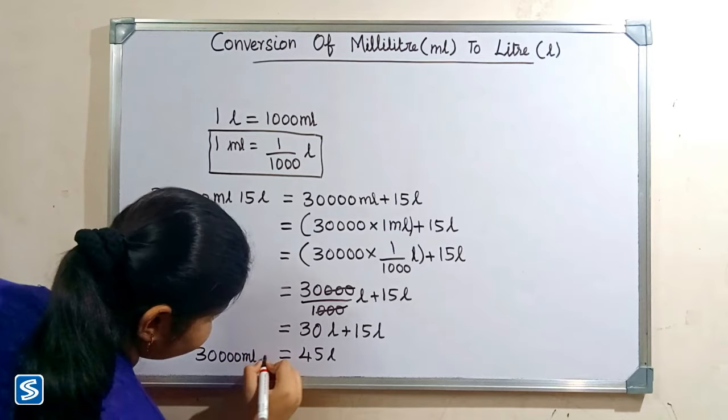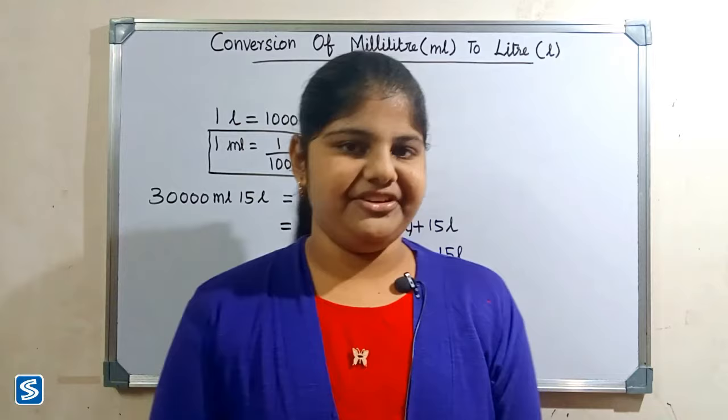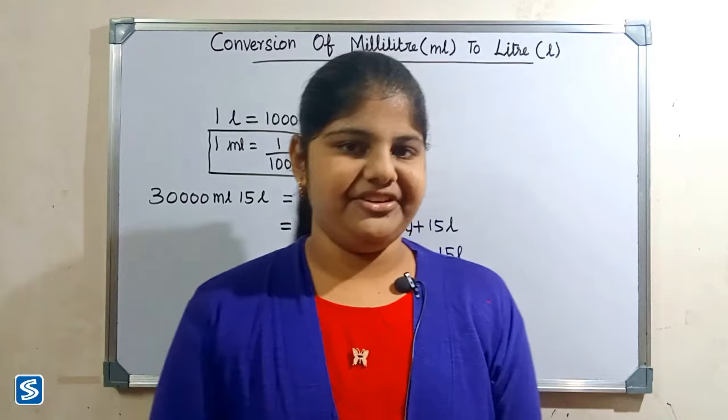So thirty thousand milliliters plus fifteen liters is equal to forty-five liters. Hope you friends all understood how to convert milliliters into liters. If you have not subscribed to my channel, kindly subscribe and press the bell button so you can receive all my updated videos regularly. Bye friends, thank you.